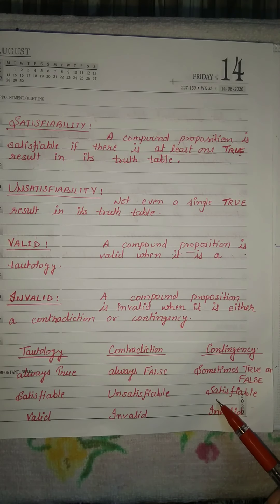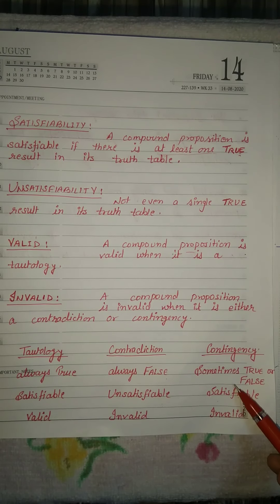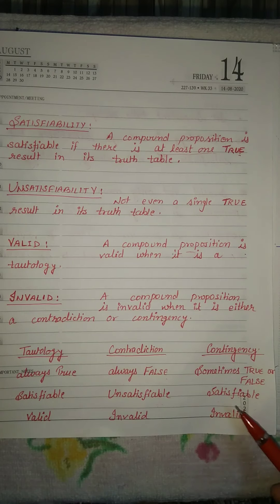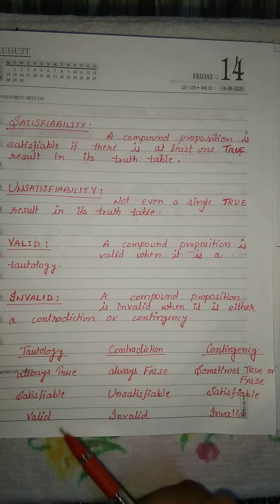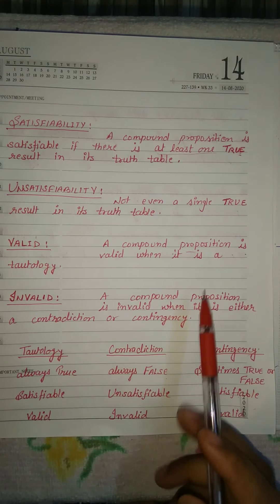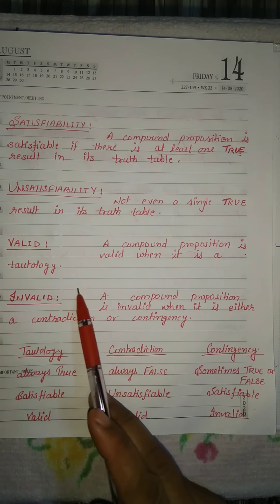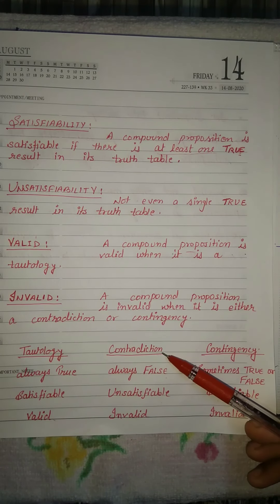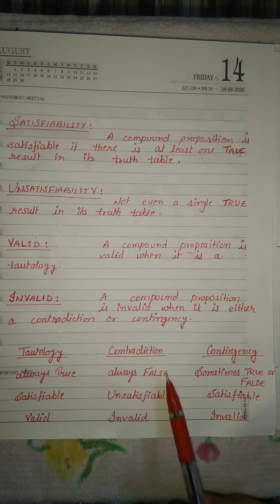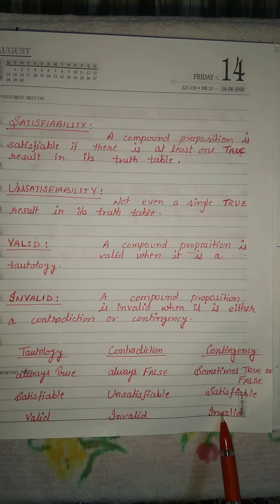Contingency is also satisfiable, because contingency is a combination of 0s and 1s — meaning at least one value is true, so contingency is satisfiable. Tautology is valid because all 1s are present. Contradiction and contingency are both invalid.